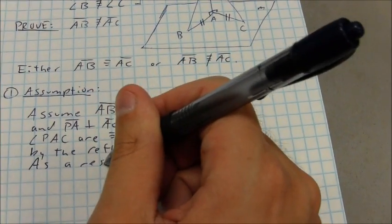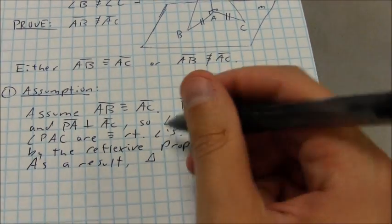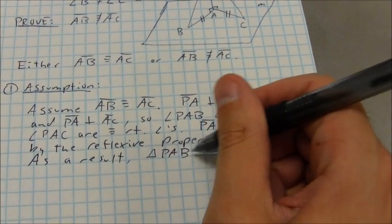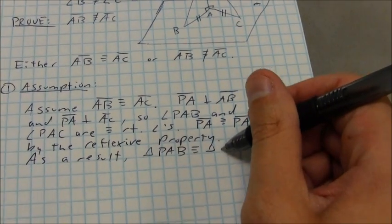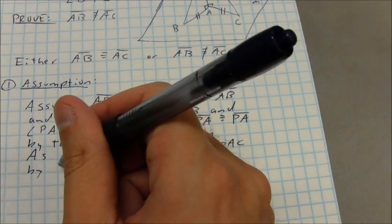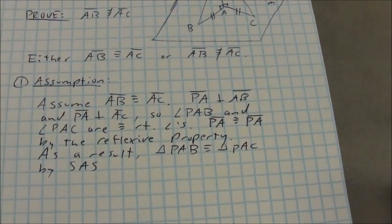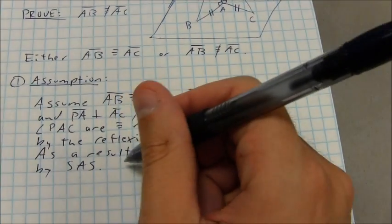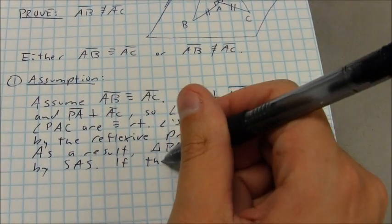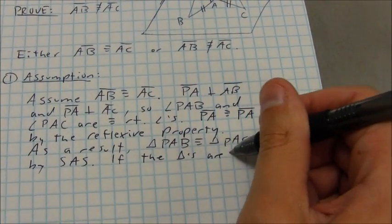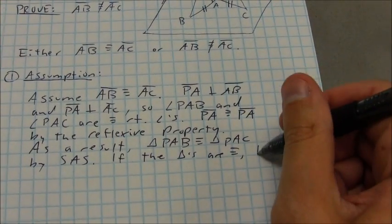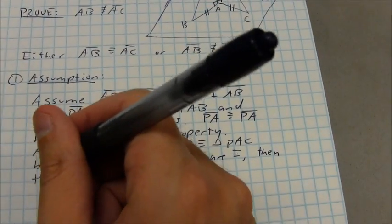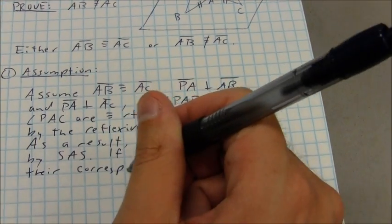So I'm going to say, as a result, triangle PAB is congruent to triangle PAC by side angle side. If the triangles are congruent, then their corresponding parts are congruent.